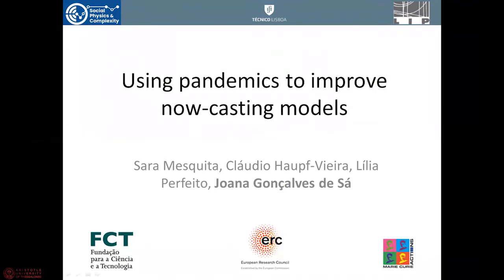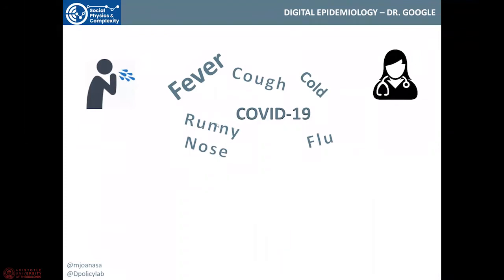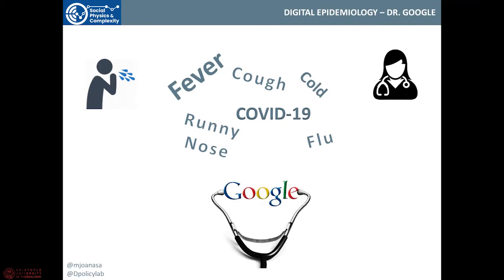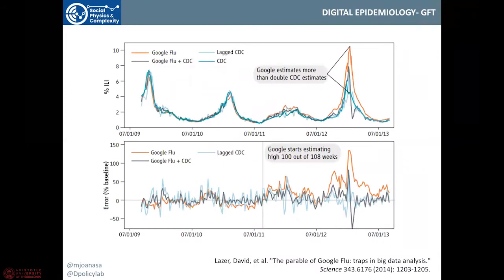My name is Joanna Gonçalves-Tsan and today I hope to convince you that we can use the craziness of pandemics like the one we're living through now to improve the nowcasting of seasonal diseases and to learn about human behavior. The idea is that when we feel sick or feel the symptoms of some disease, before going to the doctor, we go to Dr. Google, meaning that we google those symptoms or the disease. Google thought that this could be used to predict diseases and to do forecasting or nowcasting. What Google used was an algorithm that aggregated a lot of search terms related to the flu, called Google Flu Trends, and used it to do nowcasting of flu in the United States and then in different countries.